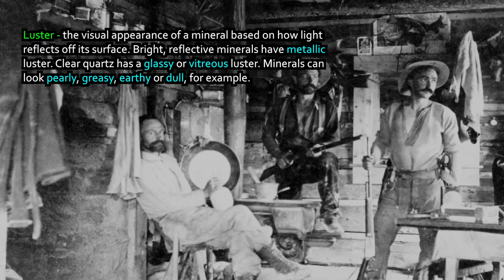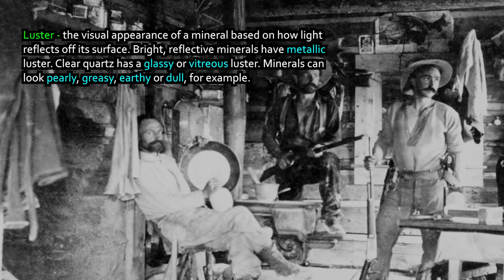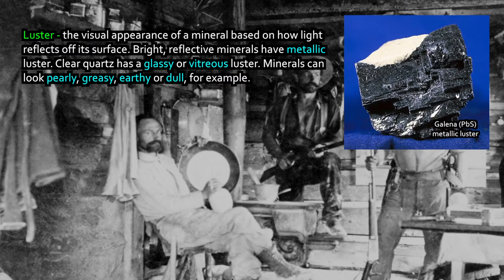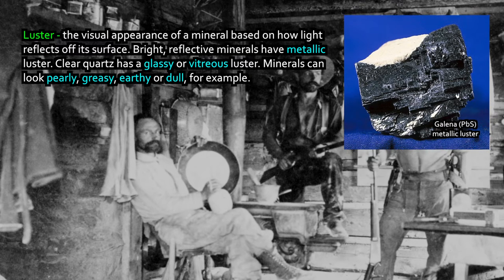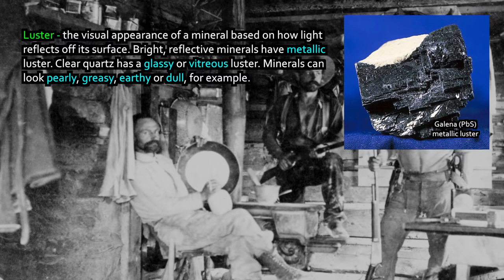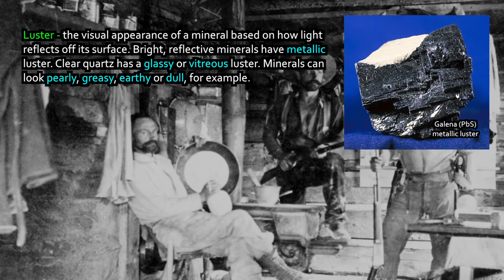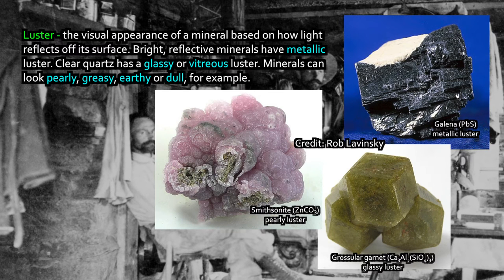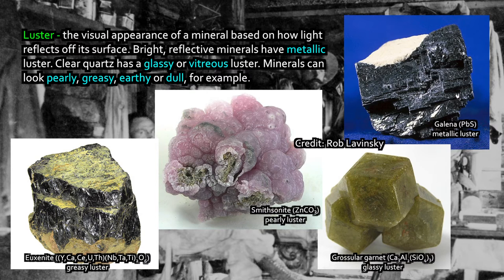Other properties, such as luster, can be actually much more helpful to identify. Luster is not the color — it's not the transparency. It's the visual appearance based upon how light reflects off a mineral's surface. For example, a piece of galena has a very bright reflective surface that looks like a metal, so we call that metallic luster. It's a lead sulfide mineral, but it looks like a metal. Clear quartz can have a glassy or vitreous luster. Minerals can look pearly, greasy, earthy, or dull. Different adjectives describe different types of luster, and because this can be a pretty diagnostic property.